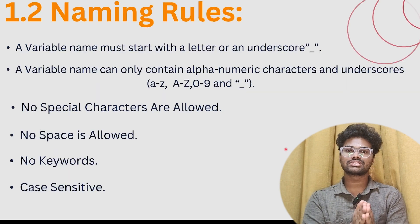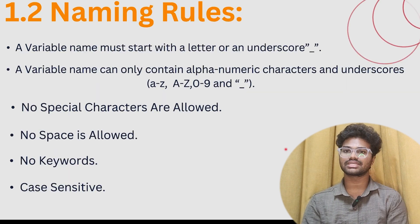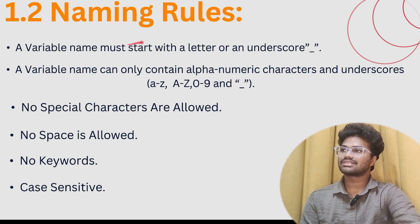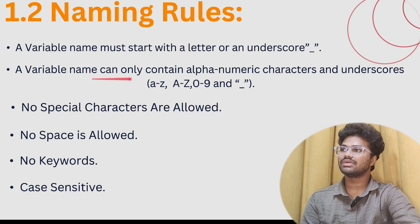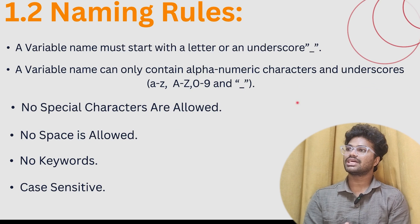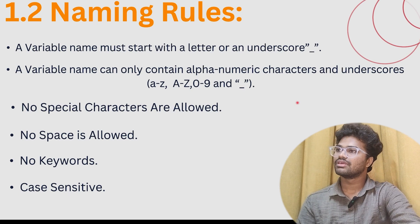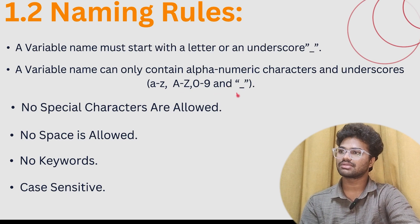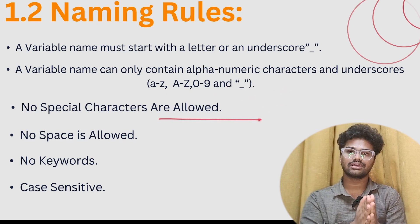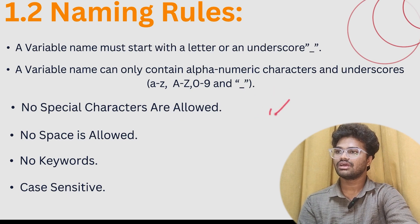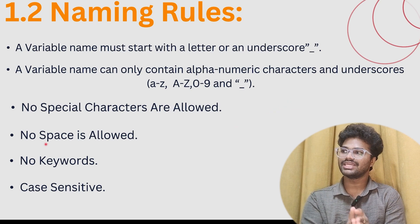Naming rules of the variable: The variable name must start with a letter or an underscore. A variable name can only contain alphanumeric characters and underscores — that is, lowercase a to z, uppercase A to Z, numbers, and underscore. Special characters like hash or dollar are not allowed. Space is not allowed. No keywords. And it is case sensitive.